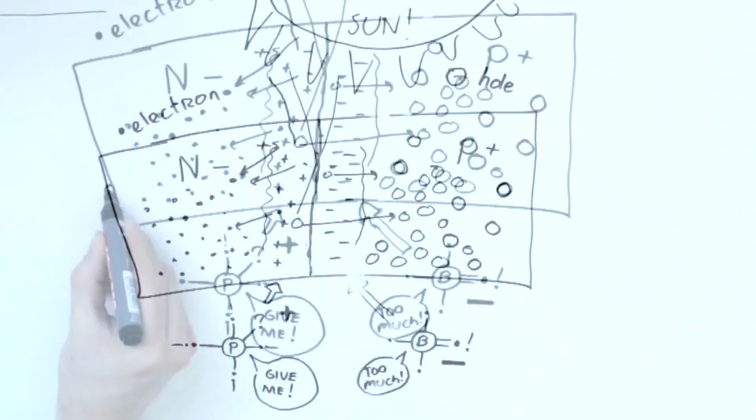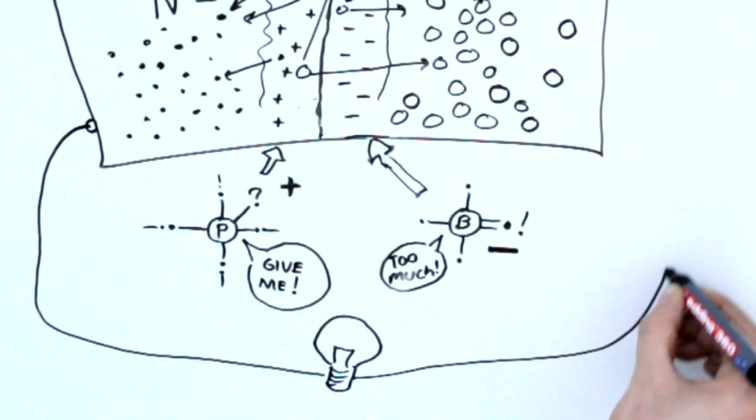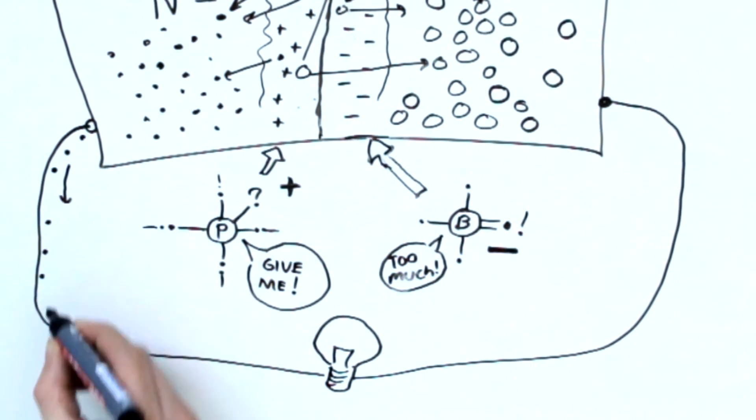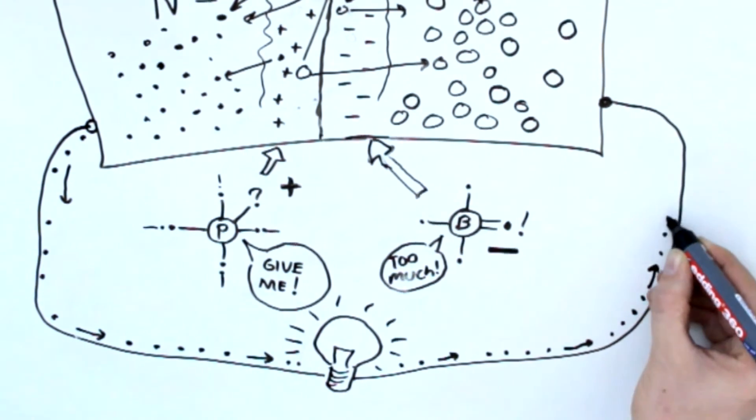To use this energy, we can connect a wire between the N-side, where the free electrons are, and the P-side, where the holes are. The electrons can now reach the holes again. So there's going to be a flow of electrons through our wire. An electric current, created by sunlight.